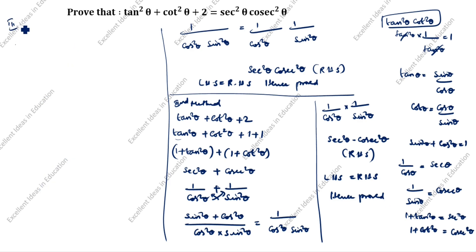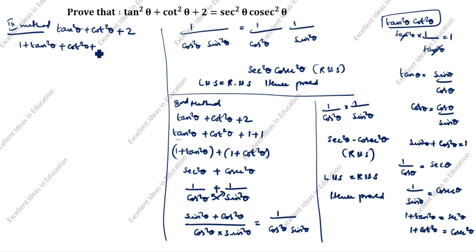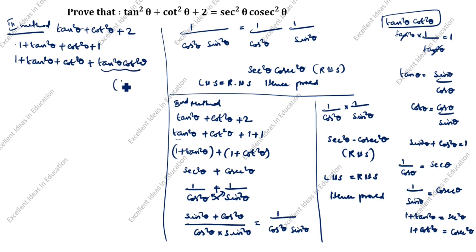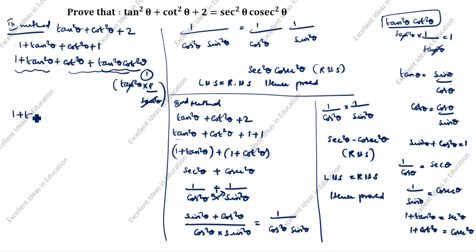Next, third method. We will prove LHS equal to RHS. LHS is tan squared theta plus cot squared theta plus 2. We split this as 1 plus tan squared theta plus cot squared theta plus 1, then rewrite the last term 1 as tan squared theta times cot squared theta, since tan squared theta into 1 by tan squared theta cancels to give 1.